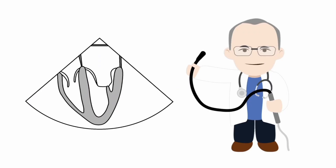In this lesson, we're going to learn how to obtain the mid-esophageal four-chamber view of the right heart, which shows us the right atrium, the tricuspid valve, and the right ventricle.